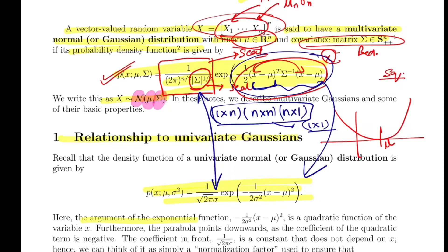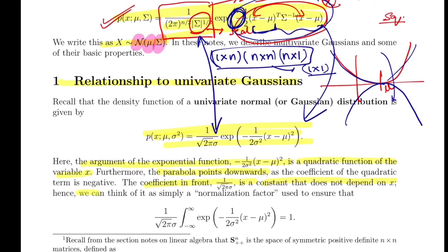The argument inside the exponential is a quadratic of variable x — a parabola. There is a negative sign, so this parabola flips downward. The coefficient in front is a constant that does not depend on x, so we can think of it simply as a normalization factor to ensure the integration sums to one — the area enclosed by the curve sums to one.